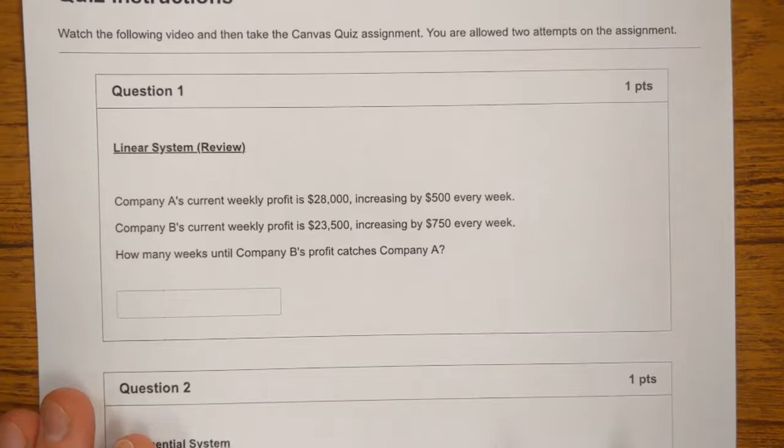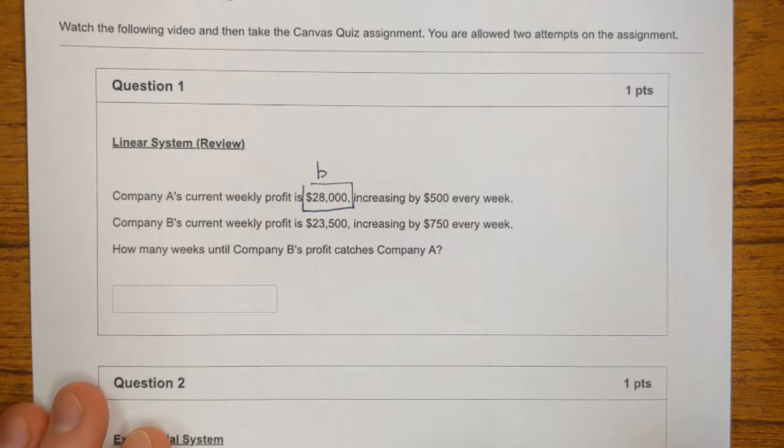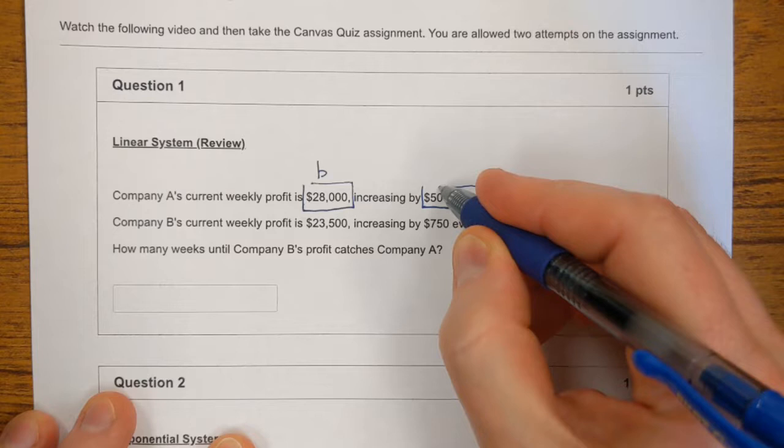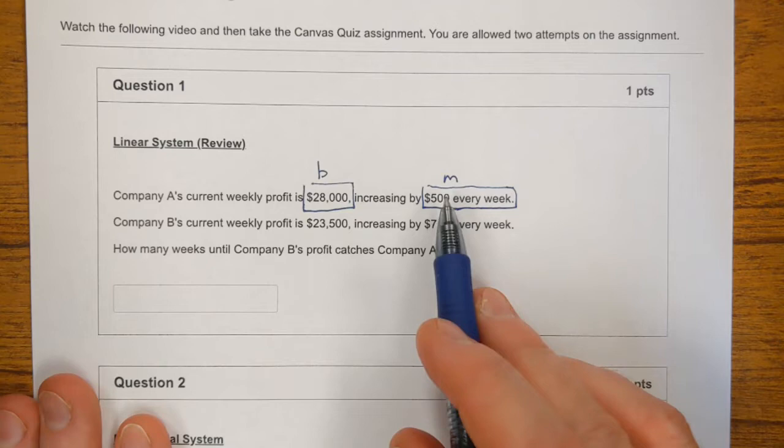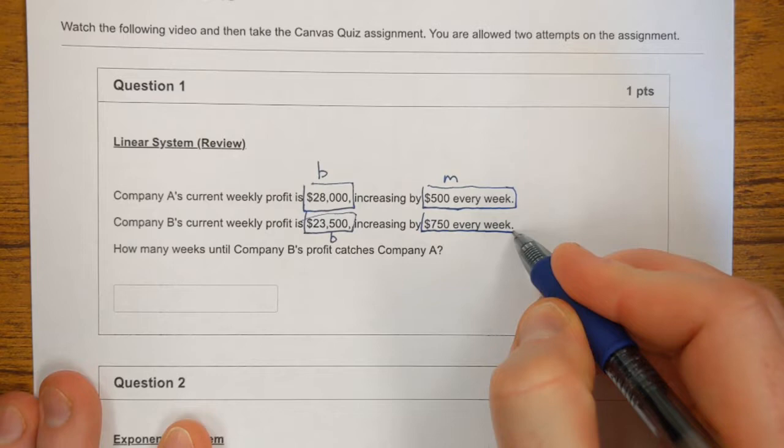So again, the goal is to solve exponential systems. First of all, we're going to do a review of how to solve a linear system. Company A's current weekly profit is $28,000. That's what it starts at, the starting profit right now. And it increases by $500 every week. That's called a slope. This is linear because every week it goes up $500. Company B's current weekly profit is $23,500. That's what it starts at.